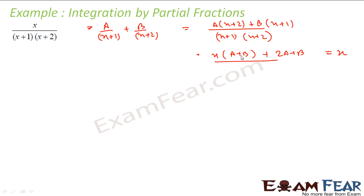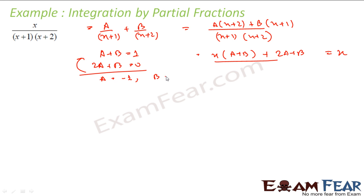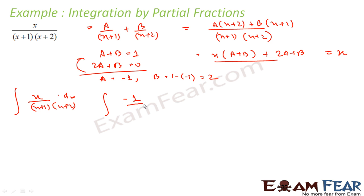Expanding and comparing coefficients: A + B = 1 and 2A + B = 0. Subtracting, we get A = −1, and then B = 1 − A = 2. So the integral of x / [(x + 1)(x + 2)] dx equals the integral of [−1/(x + 1) + 2/(x + 2)] dx.